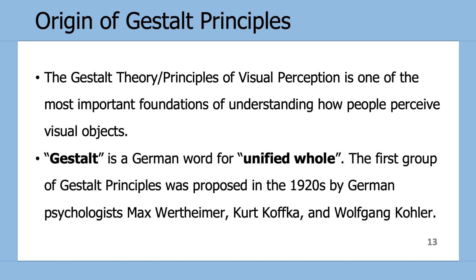Now that we've covered a couple of the Gestalt Principles, let's go further into their origin. The Gestalt Principles of Visual Perception is one of the most important foundations of understanding how people perceive visual objects. Gestalt is a German word meaning unified whole, and the first group of Gestalt Principles were proposed in the 1920s by a group of German psychologists.